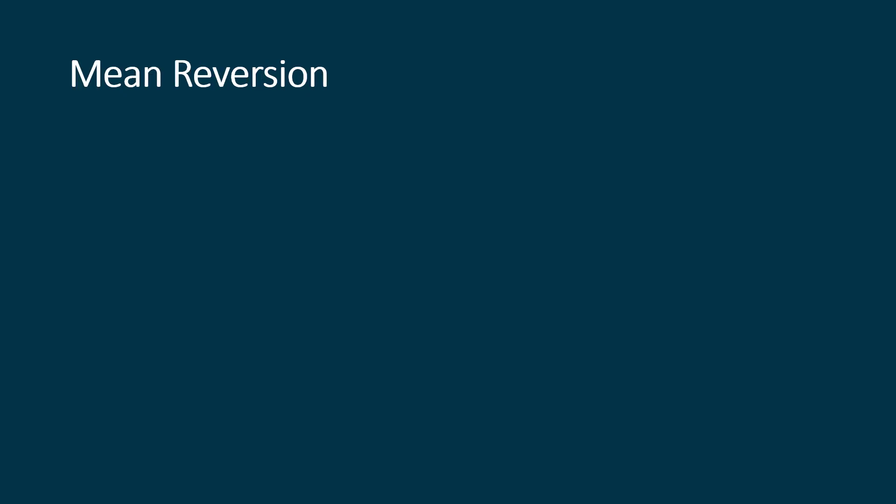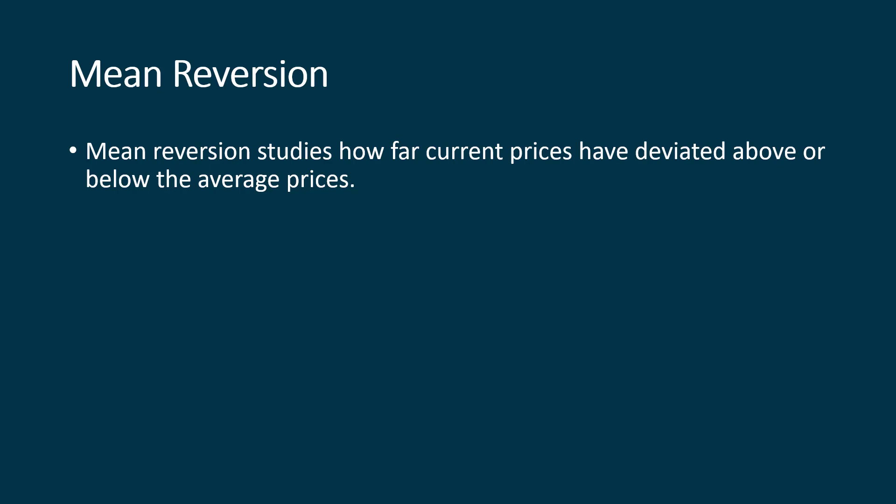What I'm going to talk about in this video is a thing called mean reversion. And before you freak out, don't worry — it's not all that complicated. Mean reversion studies how far current prices have deviated either above or below their average price. So over a period of time, we have an average price for either a stock or an index or a particular sector. Are prices above that average price, below that average price, or right about at that average price? That's really all we're trying to do here.